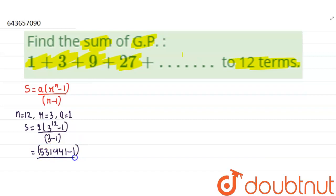So we can calculate that 531441 minus 1, which equals 531440 divided by 2. So the final answer will be 265720. Okay, so I think this question is very clear to you. Thank you.